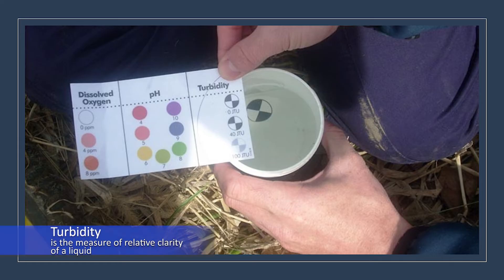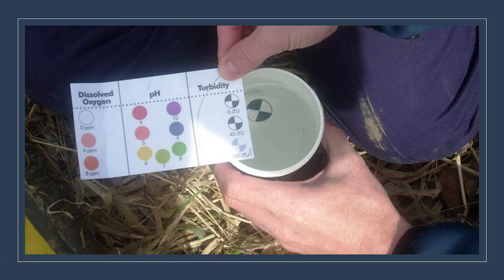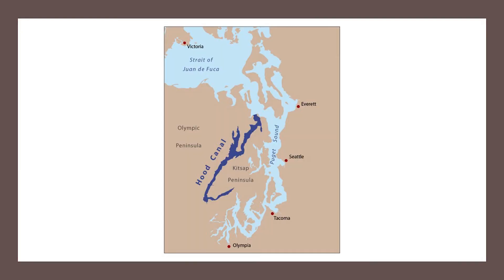Turbidity is the measure of the relative clarity of water. Turbid water is caused by suspended and colloidal matter such as clay, silt, organic and inorganic matter, and microscopic organisms. Turbidity should not be confused with color, since darkly colored water can still be clear and not turbid. Turbid water may be the result of soil erosion, urban runoff, algal blooms, and bottom sediment disturbances, which can be caused by boat traffic and abundant bottom feeders.